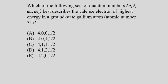Which set of quantum numbers N, L, M sub L, M sub S best describes the valence electron of highest energy in a ground state gallium atom? Gallium's outermost electron is 4P1. So N is 4, our azimuthal number for the P subshell is 1 — remember, 0 is S, 1 is P. Our magnetic quantum number can be negative one, zero, or one.